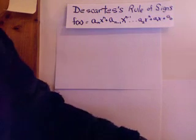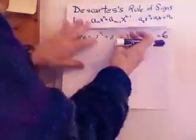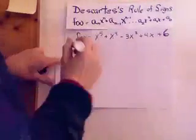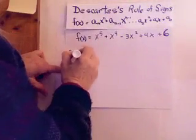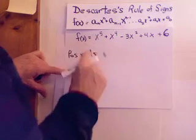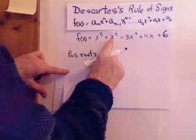Alright, so here's an example of a function I have right here. And let's look at sign changes for the positive roots. How many sign changes do I have? I go plus to plus. Not a change. Plus to minus.